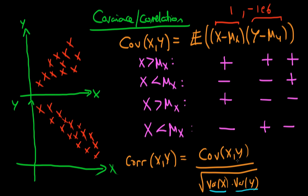Furthermore, we know that the covariance of X and Y can never exceed the variance of X times the variance of Y, because that's the greatest possible way in which X and Y could co-vary. Because of that, this correlation — which we sometimes refer to as rho — has to lie between minus one and plus one. It's plus one if they're perfectly positively correlated, meaning all points lie on a line with positive slope. It's minus one if they're perfectly negatively correlated, meaning all points lie on a line with a negative slope. And it's zero if there's absolutely no association between X and Y, because the covariance in that circumstance is also zero.